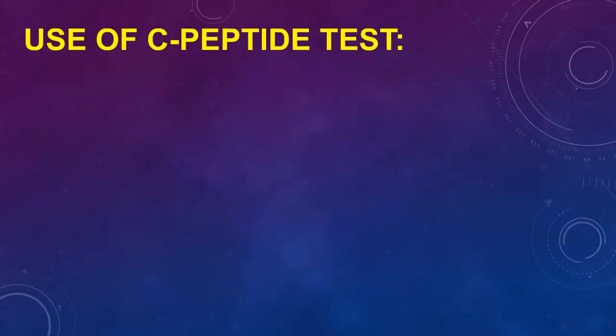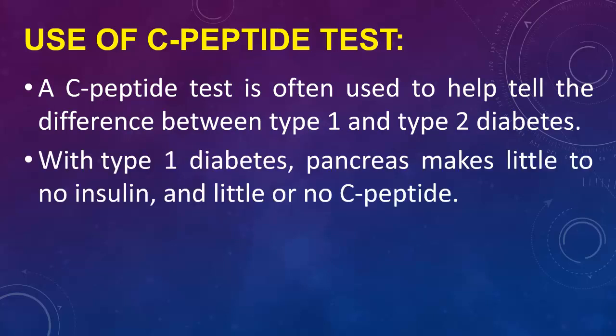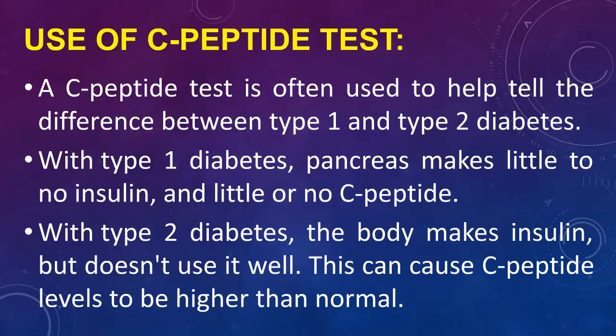Uses of the C-peptide test: A C-peptide test is often used to help tell the difference between type 1 and type 2 diabetes. With type 1 diabetes, the pancreas makes little to no insulin and little or no C-peptide. With type 2 diabetes, the body makes insulin but doesn't use it well, which can cause C-peptide levels to be higher than normal.